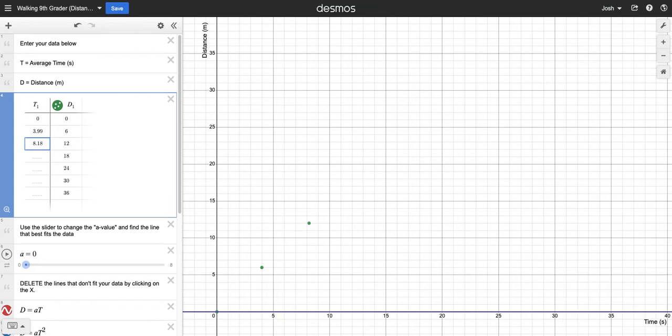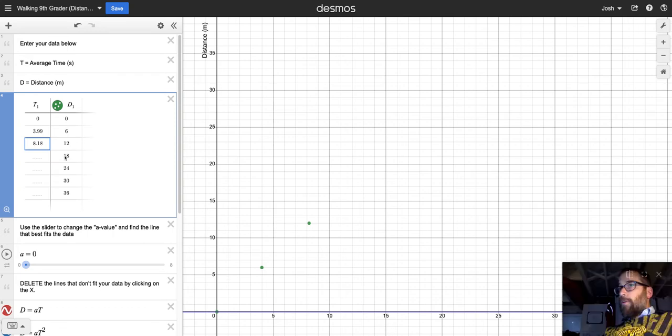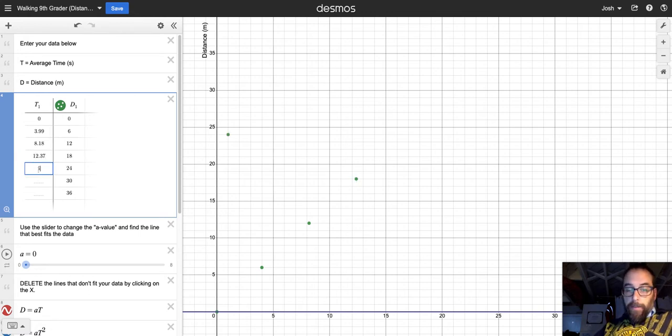Back to my spreadsheet. 12.37 and 16.53 are the next ones. 12.37 and 16.53, and as you can see...